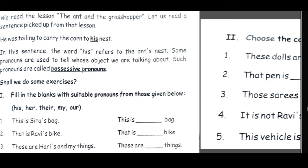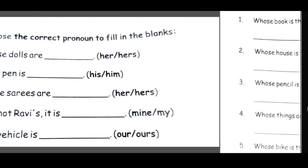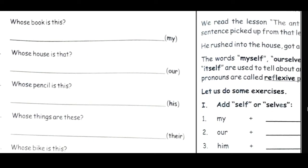Practice answers: 'This is my book.' 'Whose house is that? That is our house.' 'Whose pencil is this? This is his pencil.' 'Whose things are these? These are their things.' 'Whose bike is this? This is her bike.'